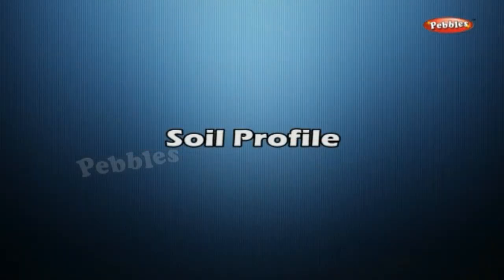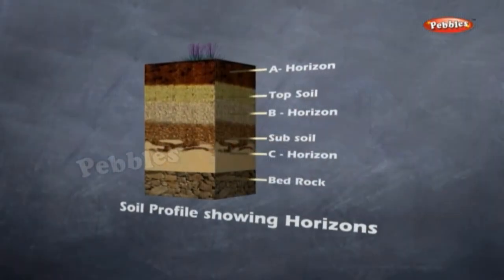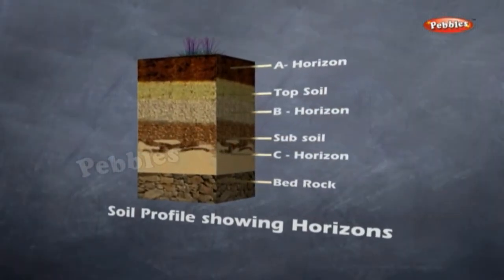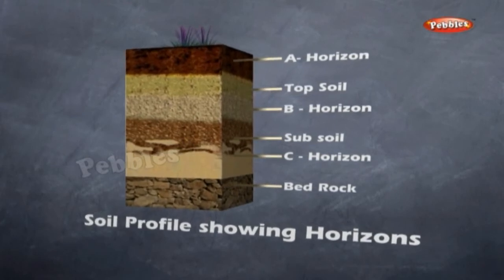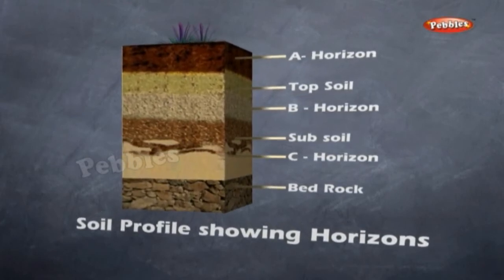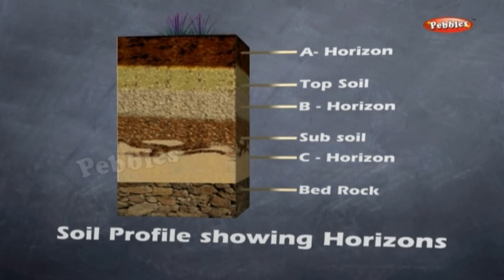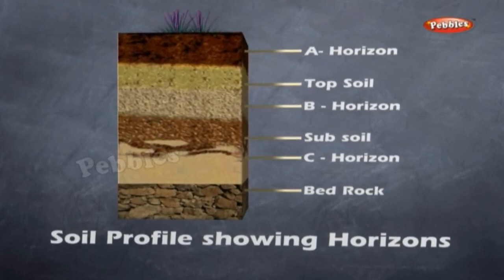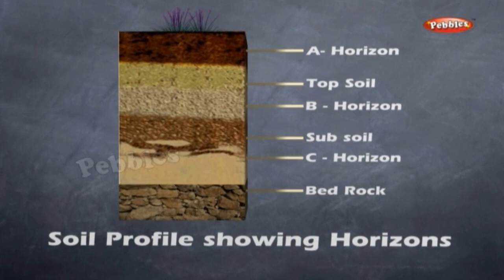Soil Profile. Dig a square pit in a field with a spade to expose the soil profile. Observe the sides of the pit dug by you. You will find that soil is arranged in three layers, called horizons, as shown.